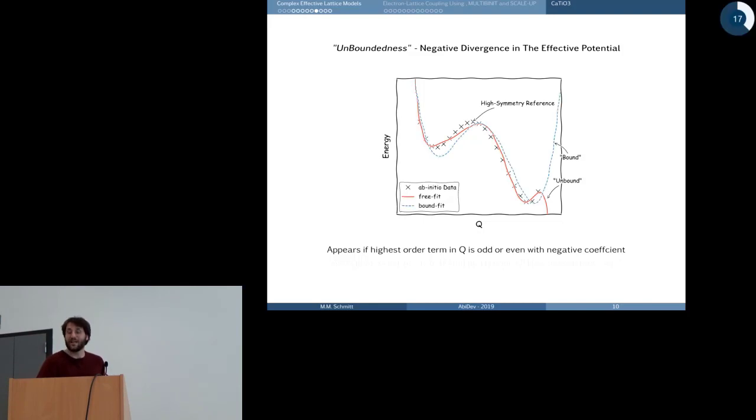So what we want to have is a bound potential that extrapolates to positive infinity in all possible directions. And the straightforward idea to get such a bound potential is just to add higher-order terms that are even and have a positive coefficient in the direction of the diverging displacement in the potential. So the question is how do we keep the precision?